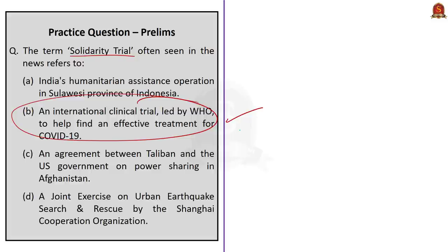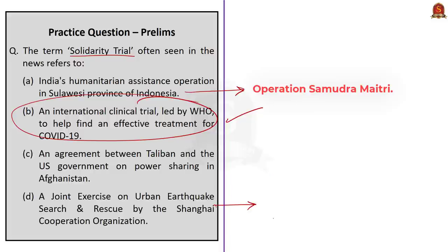Option A — India's humanitarian assistance operation in Sulawesi province of Indonesia — refers to Operation Samudra Maitri. Option D — a joint exercise on urban earthquake search and rescue by the Shanghai Cooperation Organization — is SCO JTEX. So the correct answer is option B.